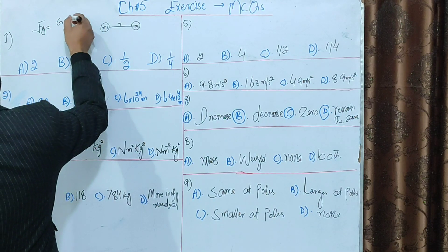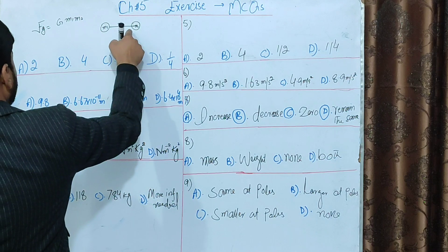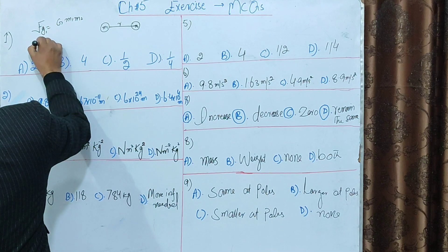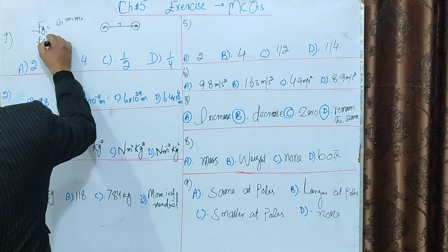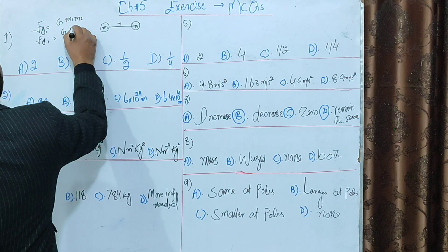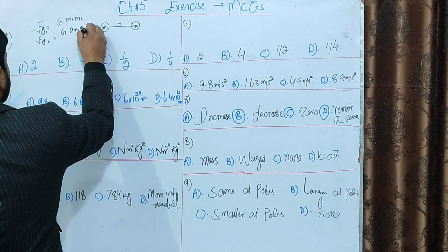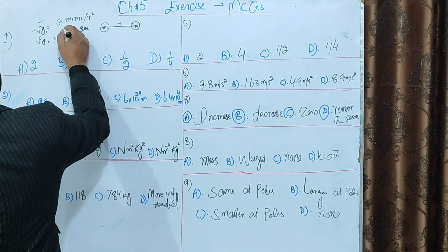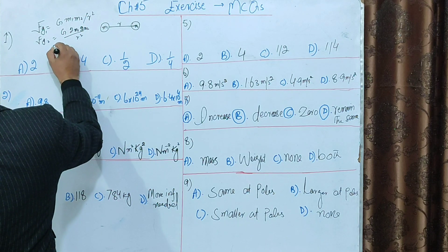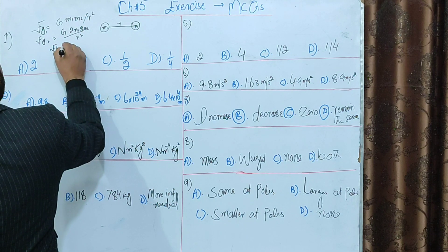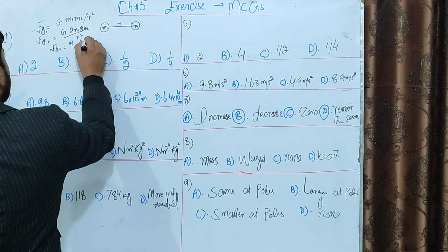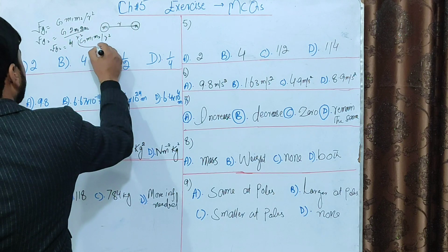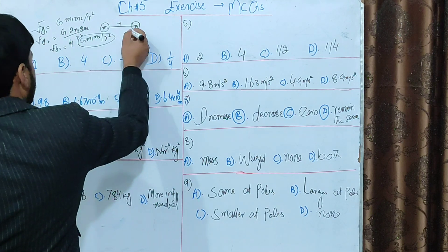When the mass is doubled — M1, M2 doubled — the force is equal. The equation gives F = GM1M2 divided by r squared. So the gravitational force FG = GM1M2 / r².